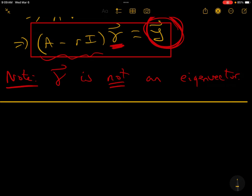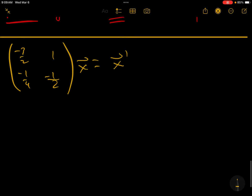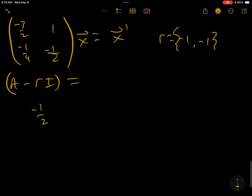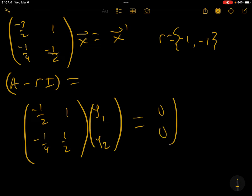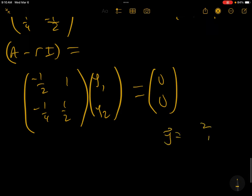We have minus three halves, minus a quarter, one, minus a half. X equals X prime. We know that R equals minus one has algebraic multiplicity two. When you look at A minus r I, you get the matrix minus one half, one, minus a quarter, a half. If you use this to find zeta, which I've done already, you get that zeta equals 2, 1. So you do that computation first.